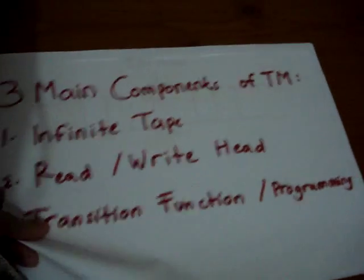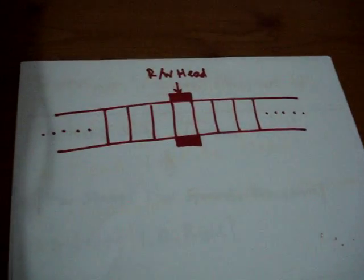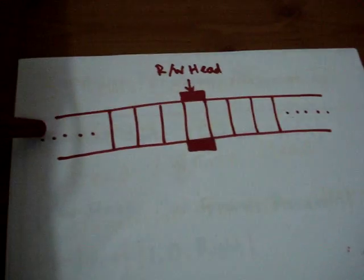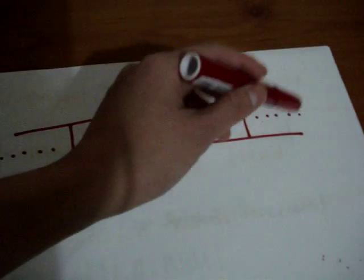This is the Turing machine's tape. The tape is divided into squares or cells, and I put some dots here to identify it as an infinite tape.